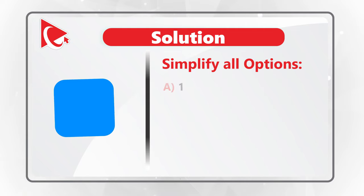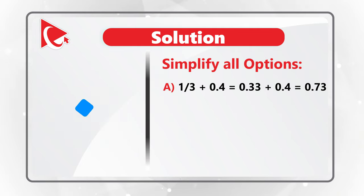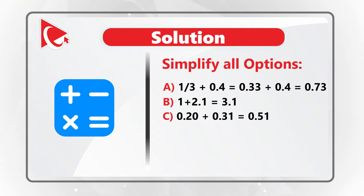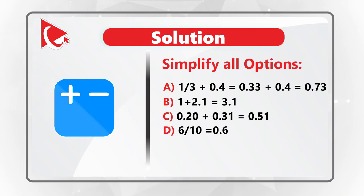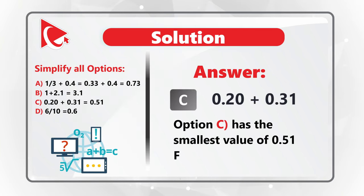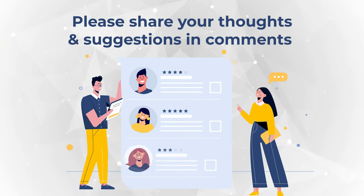Option A: one-third plus 0.4 equals 0.33 plus 0.4, which is 0.73. Choice B: 1 plus 2.1 equals 3.1. Choice C: 0.20 plus 0.31 equals 0.51. Choice D: 6 tenths equals 0.6. Looking at the answers, option C has the smallest value of 0.51, followed by option D, A, and B. Was it challenging? Please share your thoughts in comments.